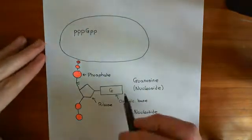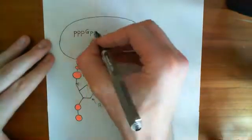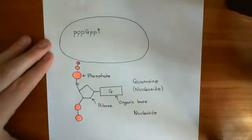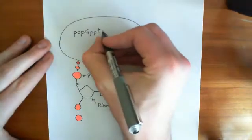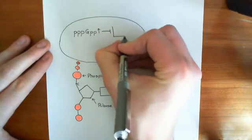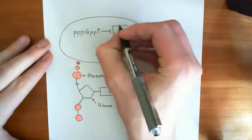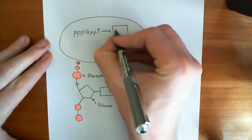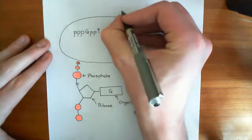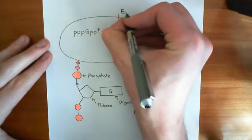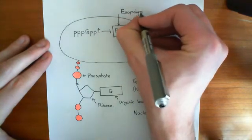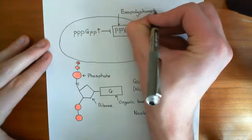The level of this pppGpp molecule in the E. coli cytoplasm appears to go up. And what does this molecule do? Well, it inhibits an enzyme called exopolyphosphatase, which is often abbreviated to PPX. So this is exopolyphosphatase, and its role is to break down polyphosphates.